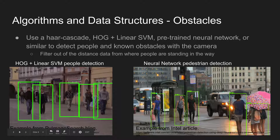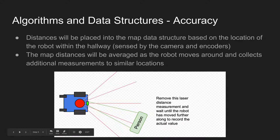You can see an example here of using a HOG plus linear SVM method compared to a neural network done by Intel. This camera-based detection is used where a person is detected and the system filters out that distance measurement. The distances will be placed into the map data structure based on the robot's location within the hallway, sensed by the camera and encoders, and the map distances will be averaged as the robot moves around and collects additional measurements from similar locations, giving multiple perspectives on each angle.